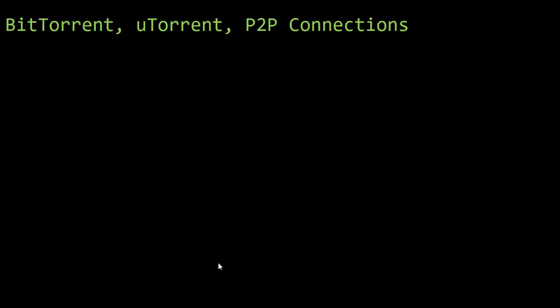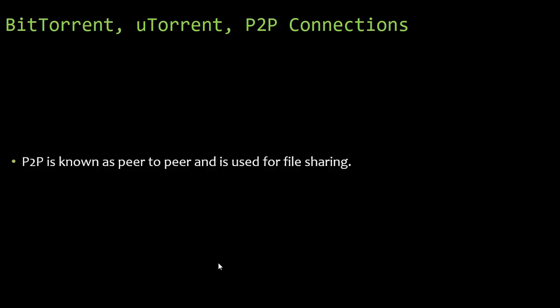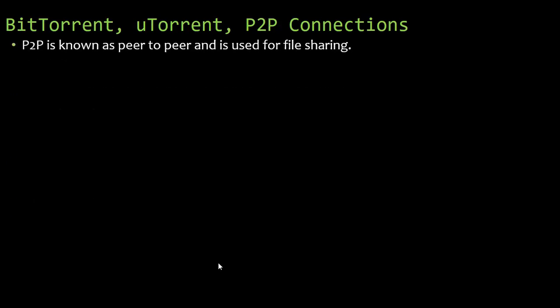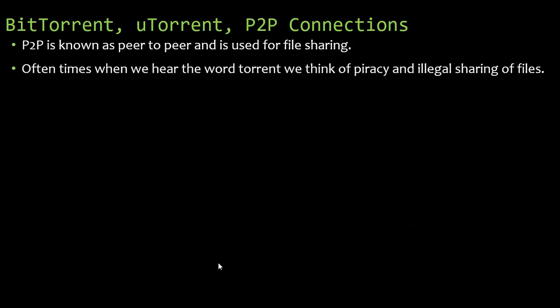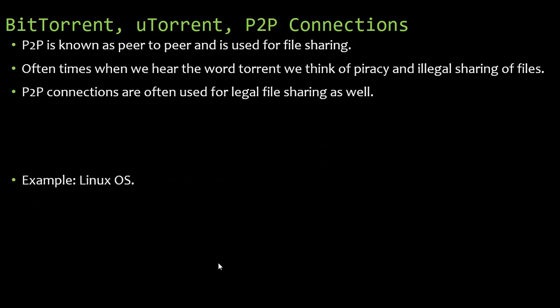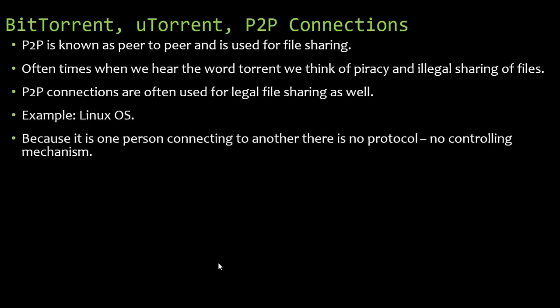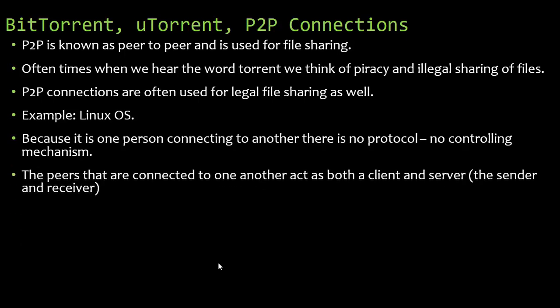Let's talk about P2P connections. You may be familiar with BitTorrent or UTorrent. P2P — peer-to-peer — is used for file sharing. A lot of times people connect this with piracy, but it doesn't have to be. You can download open-source or freeware programs, such as the Linux operating system, which is completely legal. It's copyright infringement that makes it illegal. There's no controlling mechanism — it's just peer-to-peer.